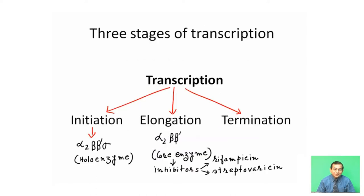There are three stages of transcription. There is initiation, which is carried out by the holoenzyme — alpha 2, beta, beta prime, and sigma. Then, the elongation process is carried out by alpha 2, beta, and beta prime. This is the core enzyme.